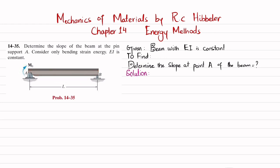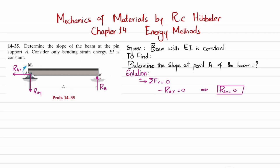Let's start with the solution. The first step is to remove the roller support, giving a vertical reaction force RB, and removing the pin support gives a vertical reaction RAy (taken downward) and a horizontal reaction RAx. We find reaction forces using equations of equilibrium. The sum of all forces in the x-direction equals zero, and since there is only one horizontal reaction force, RAx equals zero.